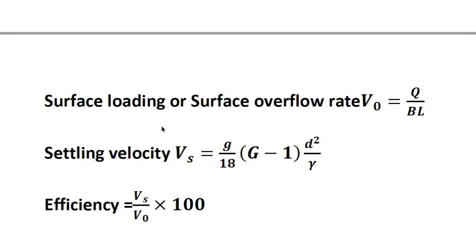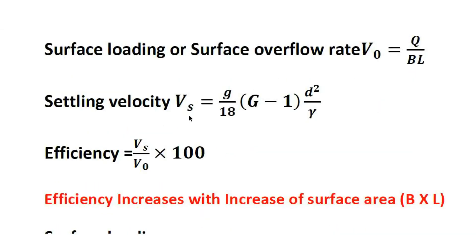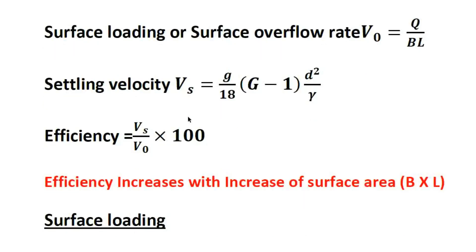In sedimentation, particles settle to the bottom. If settling velocity equals the surface overflow rate, that is sufficient. Efficiency increases with an increase in surface area BL. Surface overflow rate V₀ = Q/BL. Increasing BL — the surface area — increases efficiency. This is a most repeated question.